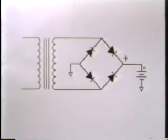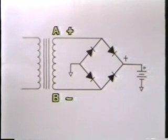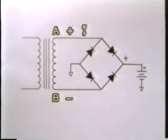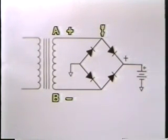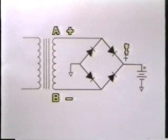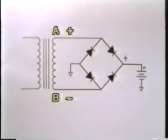Let's trace the current flow when point A is positive and point B is negative. The current flows from point A to the junction of these two diodes. The diode on the left is pointed the wrong direction against the current flow, so the current will flow through the diode on the right, through to the battery giving it a little charge, and through to ground.